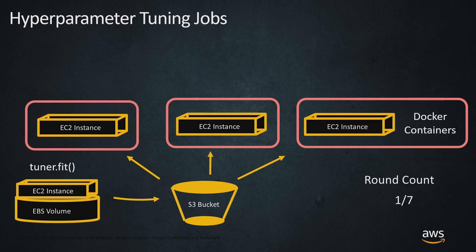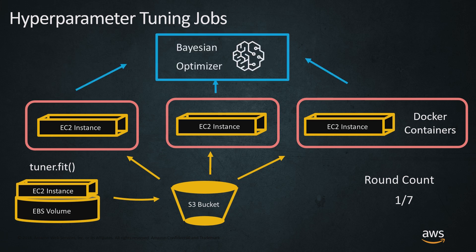Those three training jobs run on the same data and same model, just with different hyperparameter settings. After training, the results are pulled into a Bayesian optimizer. That Bayesian optimizer comes out of Amazon Labs — you can read white papers on how it works. It pulls in the objective performance of the model. If we're interested in AUC — for example, under class imbalance — or precision, recall, accuracy, or another objective metric, you can plug that into the Bayesian optimizer.